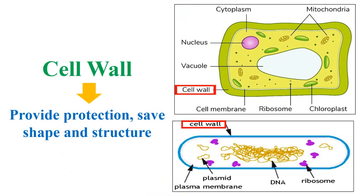Cell wall provides protection, saves shape, and saves the structure of plant and bacterial cells.